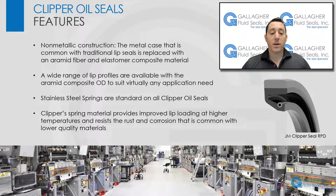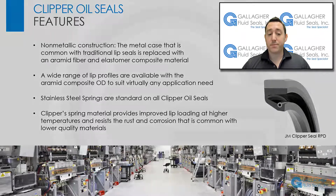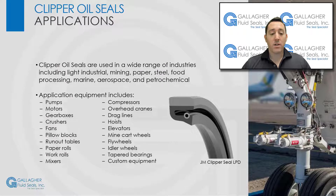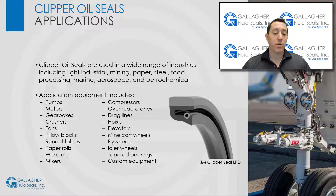The upgraded spring ensures consistent lip loading over the life of the seal. If a Clipper seal is only offered from the factory in a solid design, Gallagher can split the seal and supply it to the customer. They are used in a wide range of industries including light industrial, mining, paper, steel, food processing, marine, aerospace, and petrochemical.